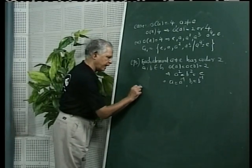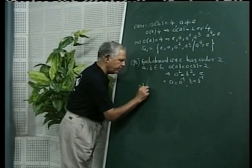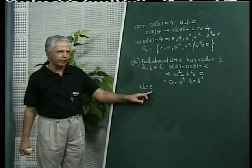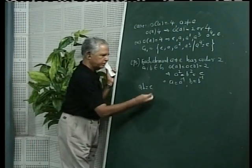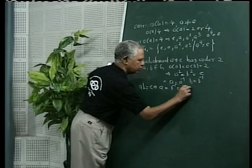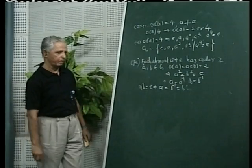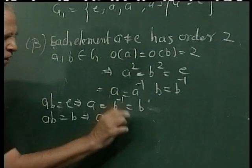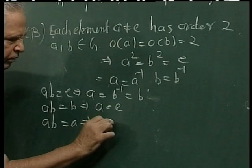Now let us take this third element ab. Then ab cannot equal e, because if ab equals e, then we get a equals b-inverse, b-inverse equals b, and that means we get a equals b — a contradiction since a is not equal to b. If we assume ab equals b, then this implies a equals e, and similarly ab equals a implies b equals e.